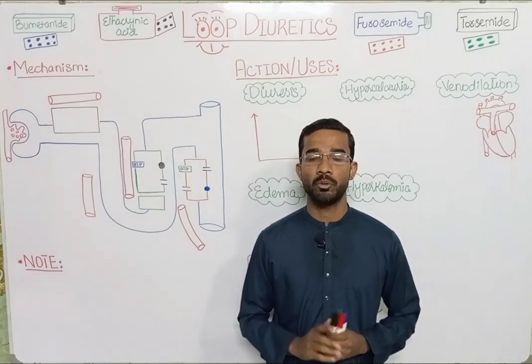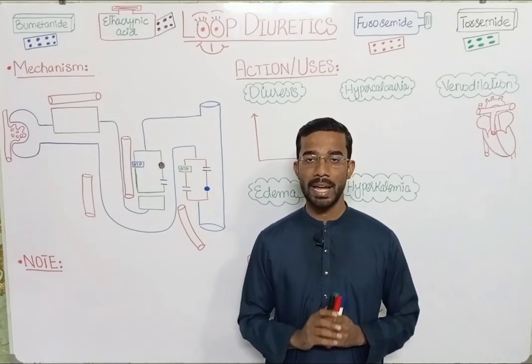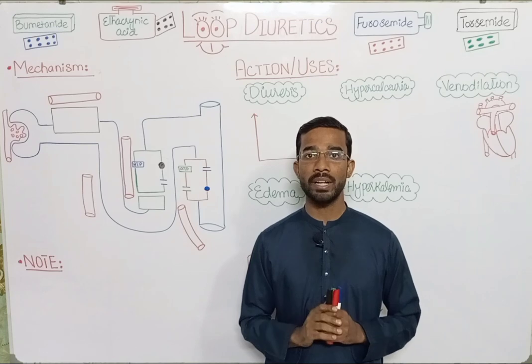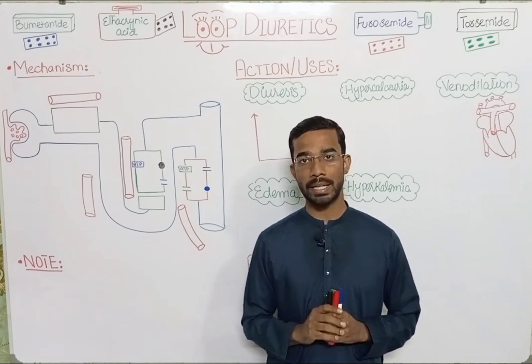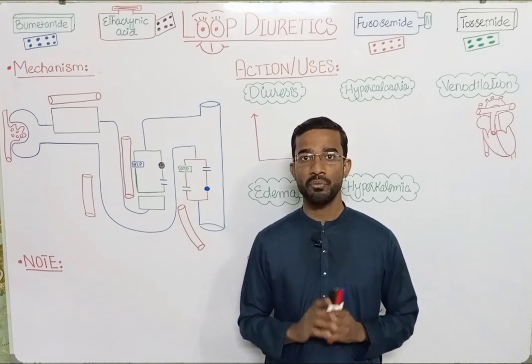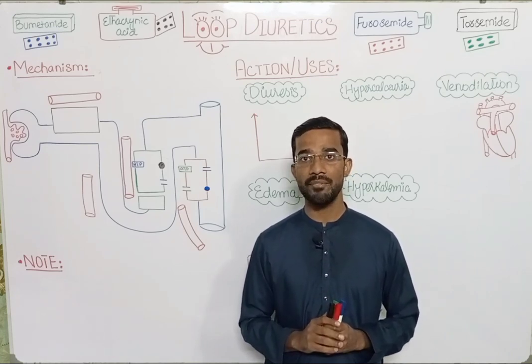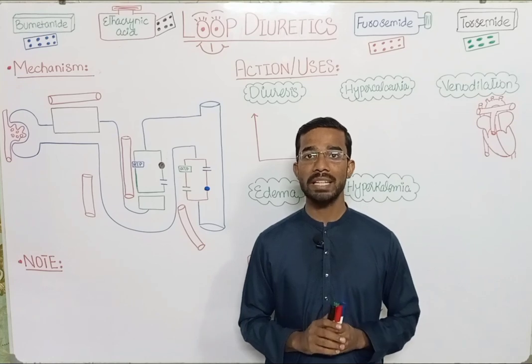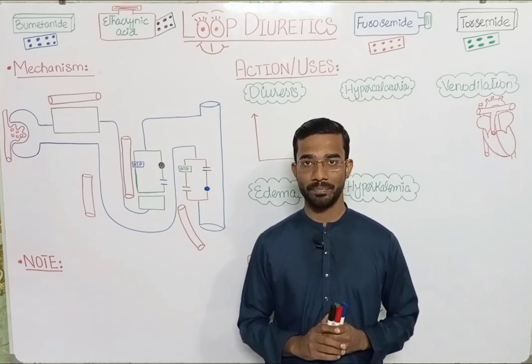Welcome to MATLAQTO. Today we are going to discuss loop diuretics. In loop diuretics, we divide them into two categories: phenoxyacetic acid derivatives and sulfonamide derivatives.